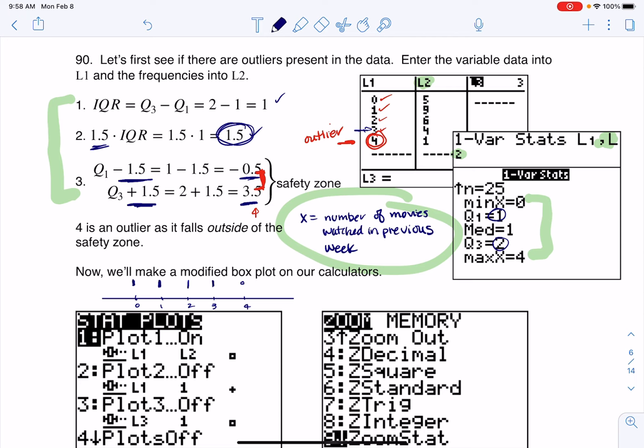You always want to box the middle 50% of your data, so I box from one to two. I don't have a middle median line because my median equals Q1, which is fine. I whisker to my highest non-outlier and whisker down to my min, and there's my box plot.